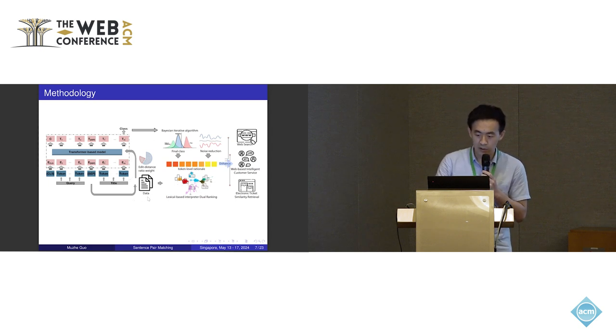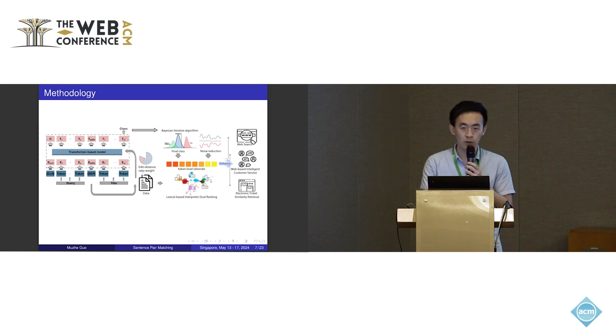The first one is edit distance weighted fine-tuning for the model's training. The second one is Bayesian iterative prediction for the inference or prediction process. The third one is a lexical-based interpreter called dual ranking, for model interpretation.